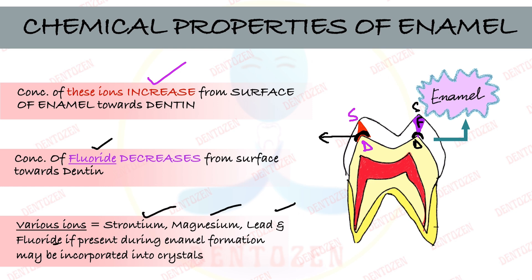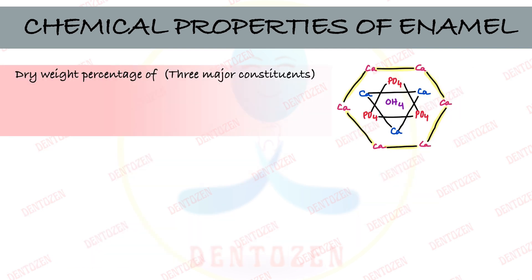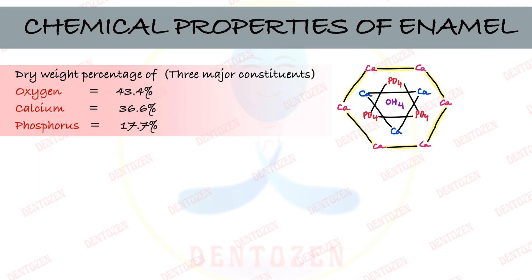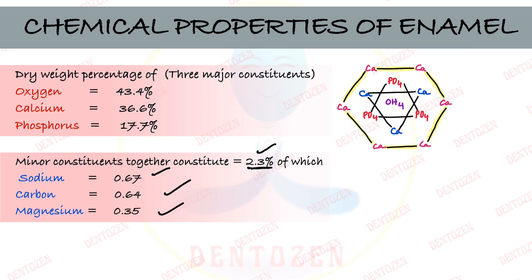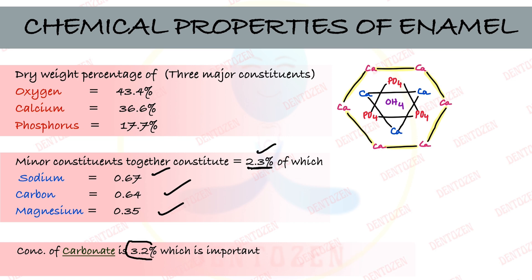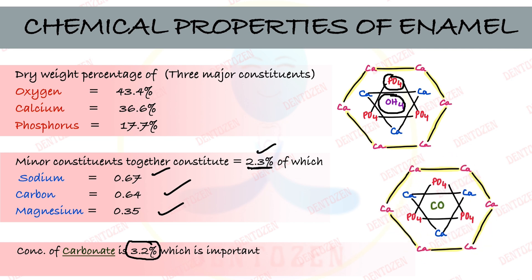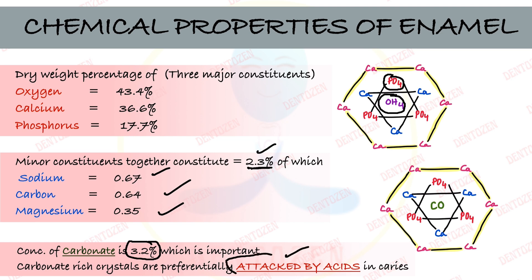Ions like strontium, magnesium, lead, and fluoride, if present during enamel formation, can incorporate into the crystals. Dry weight percentage of major ions: oxygen is 43.4%, calcium is 36.6%, and phosphorus is 17.7%. Minor constituents together make 2.3%, with sodium at 0.67%, carbon at 0.64%, and magnesium at 0.35%. Carbonate concentration is very important at 3.2%, as carbonate can replace hydroxyl and phosphate ions, making crystals weak and susceptible to acid attack.